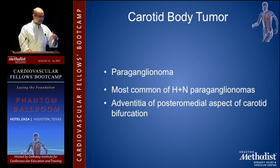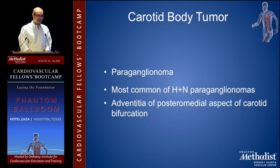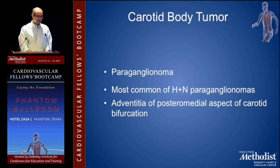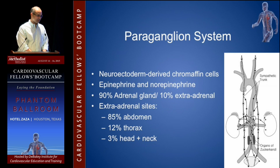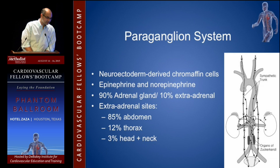Actually, outside the adrenals, the most common site is the belly, and then comes the neck. In the neck, this is the most common type of head and neck paraganglioma. It comes from the adventitia of the posteromedial aspect of the carotid bifurcation — that's where the carotid body is. A little more about the paraganglion system: it's neuroectoderm-derived chromaffin cells.